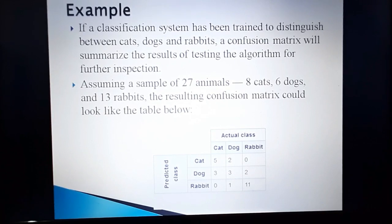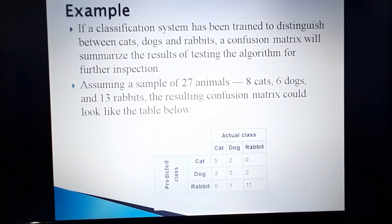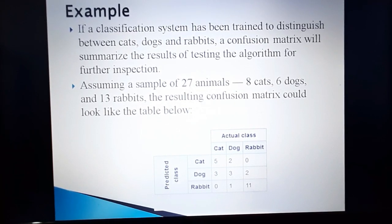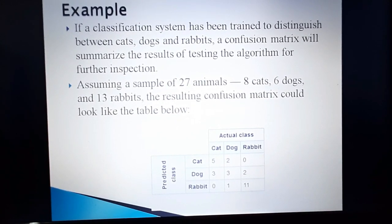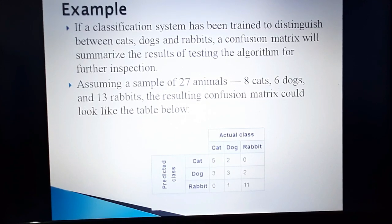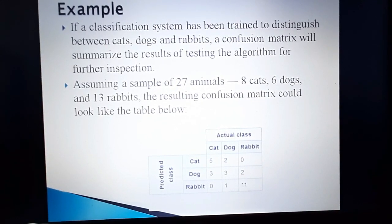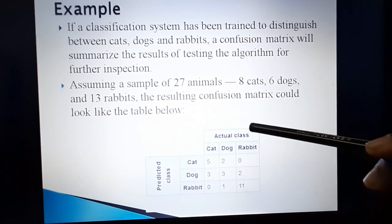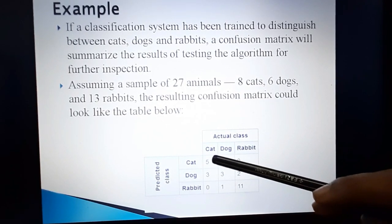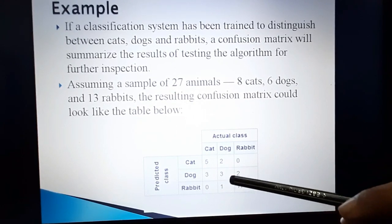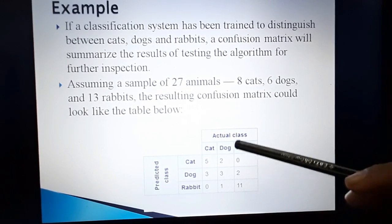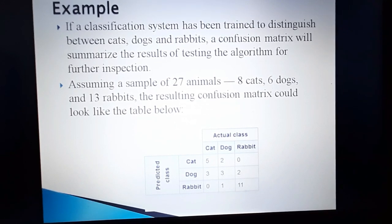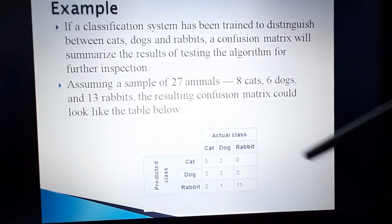Here we have a confusion matrix. This classification system has to predict answers, and we need to evaluate model performance — checking how accurate this classification system is. In this confusion matrix we have the actual class: 8 cats, 6 dogs, 13 rabbits. This is the predicted class row.